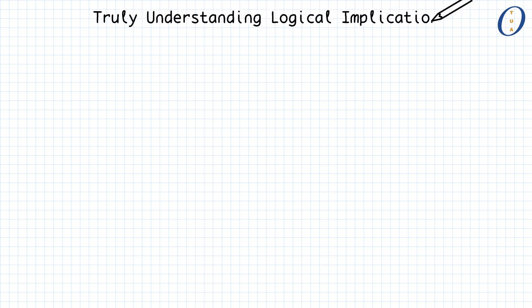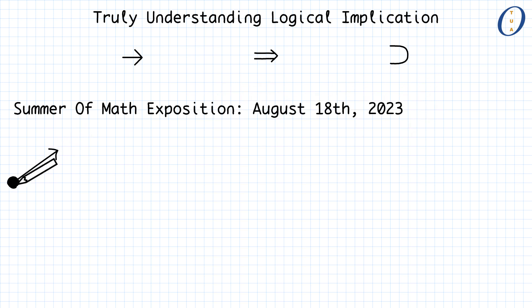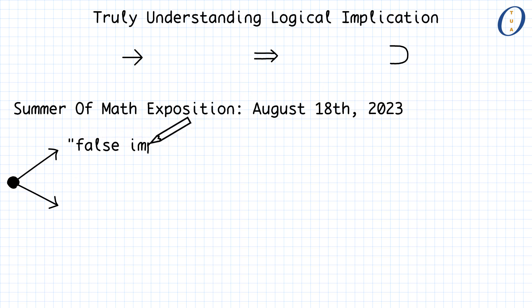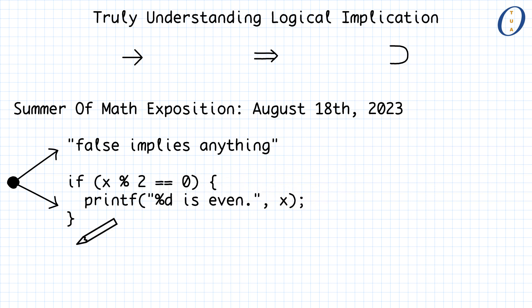Implication, which can be written in various ways, is the trickiest propositional logic connective to understand properly. For this tutorial, which I have prepared for the Summer of Math Exposition, I plan to explain implication. In particular, I will reveal what is behind the claim 'false implies anything,' and also what exactly is the link between implication and the if-then-else construction in typical programming languages.